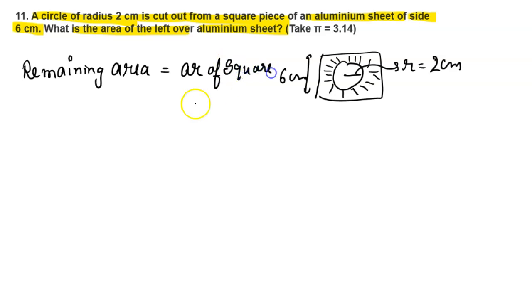Area of square is side times side minus area of circle is πr². Side times side is 6 times 6 minus πr².